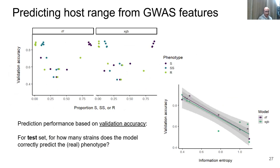The next question was how well I could predict the host range phenotype based on significant GWAS features. For phenotypes that are simple — with most strains being sensitive or resistant — I could predict pretty well. But for more complex phenotypes, accuracy was only 50 to 60%. When the phenotypes were more complex in terms of information entropy, with the highest being one-third sensitive, one-third semi-sensitive, one-third resistant, the validation accuracy was lowest. Validation accuracy is how many strains for which the model correctly predicts the real phenotype in the test subset.